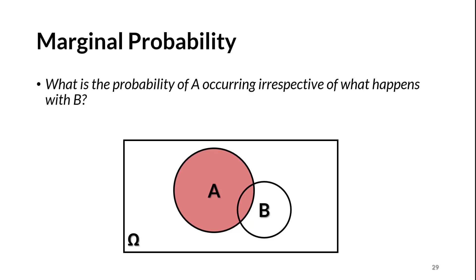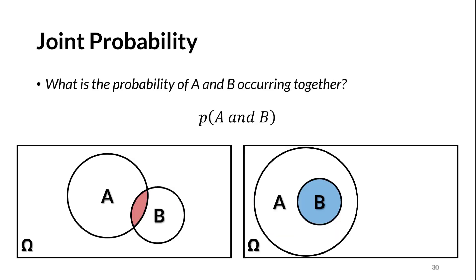Marginal probability on the Venn diagram answers: what is the probability of A occurring irrespective of what happens with B? This probability is the area of the red circle. For joint probability, we consider the region belonging to both A and B. On the left, with two overlapping events, the probability of A and B happening at the same time is the area of the red lens — smaller than the marginal probability of either A or B. On the right, with total overlap, there is no way for B to happen without A, so the joint probability equals the probability of B, the smaller event.